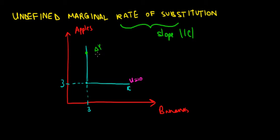The slope is the change in y relative to the change in x, and in this case we would have the change in the consumption of apples relative to the change in consumption of bananas.